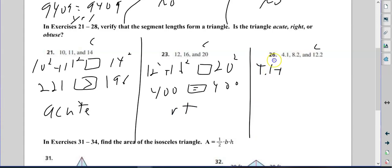And 4.1, you can maybe guess what this is going to be: squared plus 8.2 squared equals 12.2 squared. So 4.1 squared plus 8.2 squared is 84.05. You should be able to guess already because 12 squared is 144. 12.2 squared is 148.84, which means this is greater, which makes it obtuse.